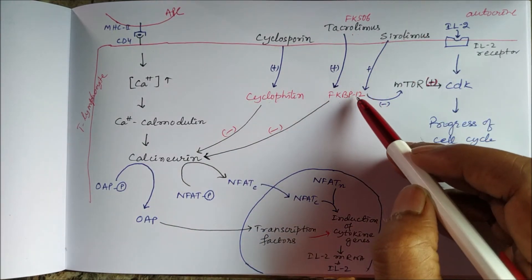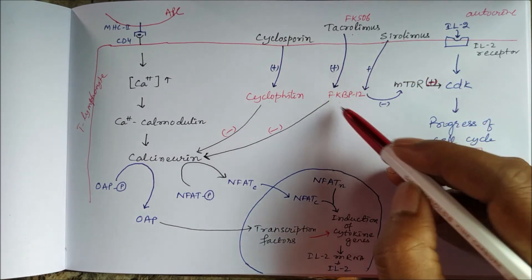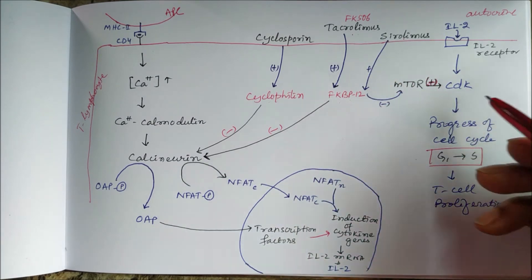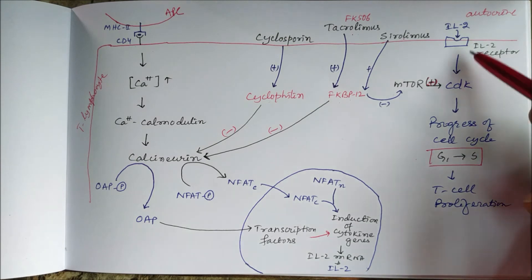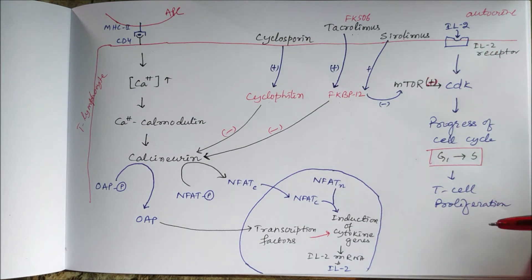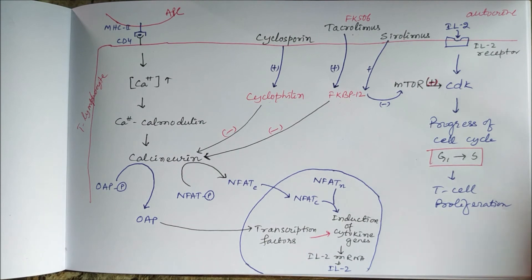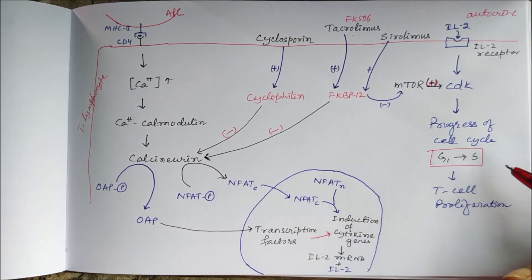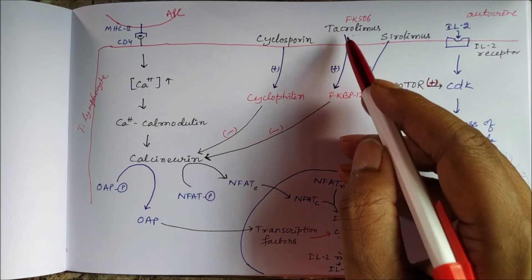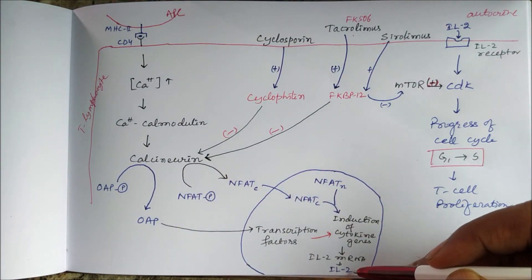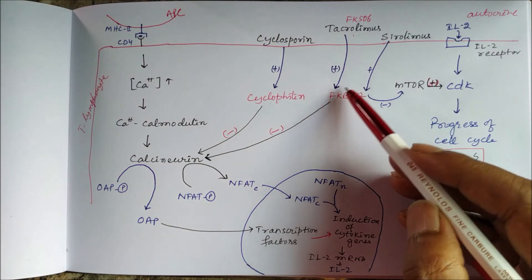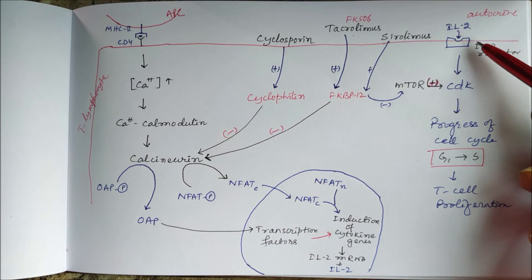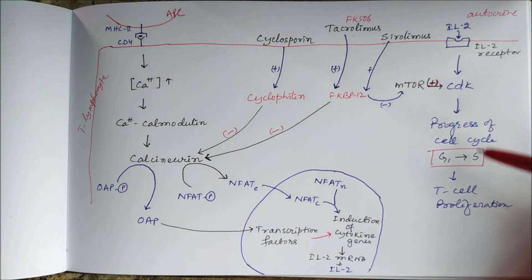Sirolimus also binds to FKBP12, but the sirolimus-FKBP12 complex inhibits mammalian target of rapamycin (mTOR), thereby inhibiting interleukin-2 action and T cell proliferation. In summary: cyclosporine and tacrolimus, by inhibiting calcineurin, inhibit interleukin-2 generation; sirolimus, by binding FKBP12 and inhibiting mTOR, inhibits interleukin-2 signaling and action.